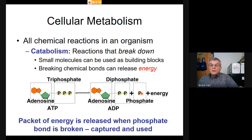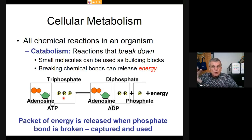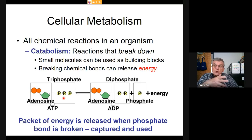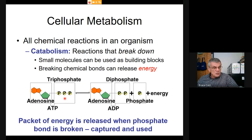ADP and phosphate are completely reusable. They can go back into the mitochondrion, where the phosphate is stuck back onto ADP to regenerate ATP. This is a cycle: ATP out to the work of the cell, ADP and phosphate back to the mitochondria where ATP is generated again, starting the cycle all over.